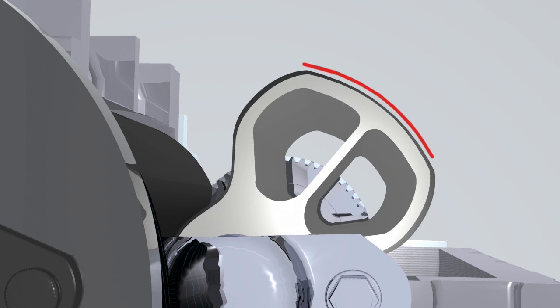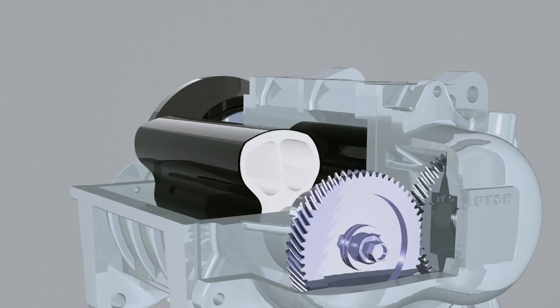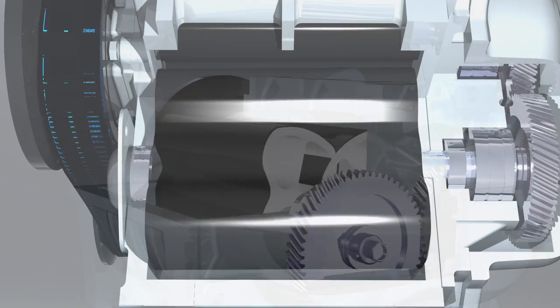Their unique shape provides a large sealing area as the rotors rotate between the housing and each other. This is what gives the Ogura air pump its very high efficiency compared with other air pumps on the market.